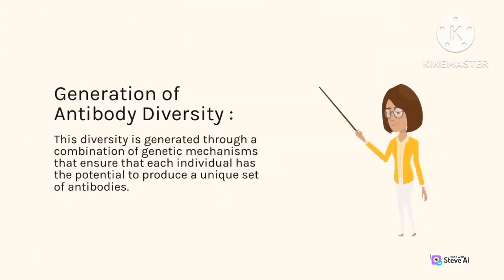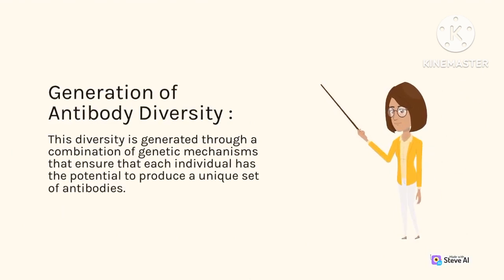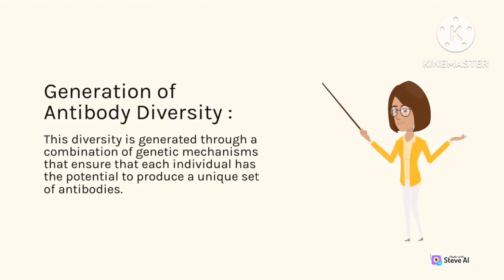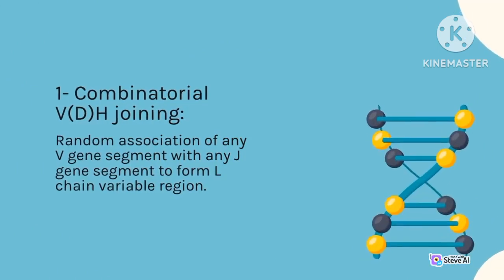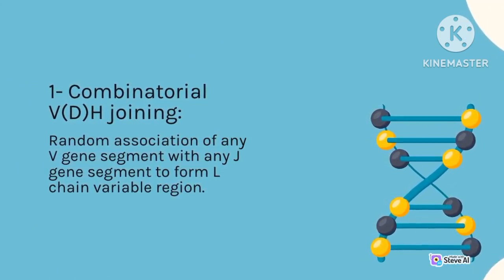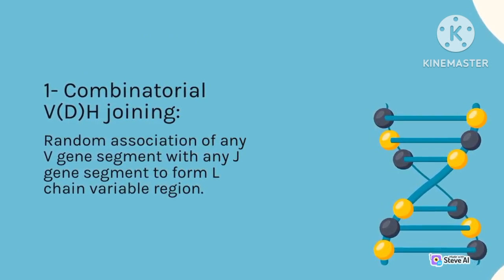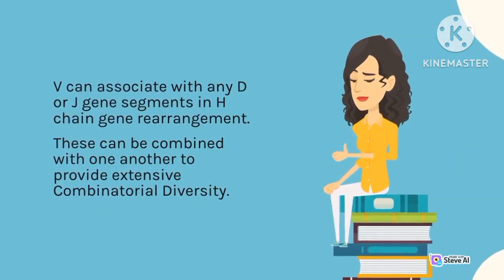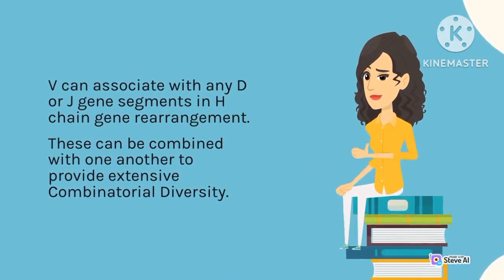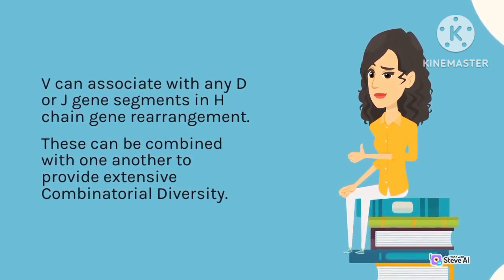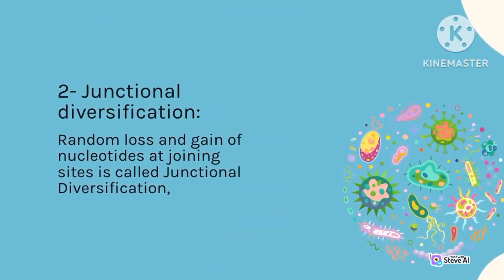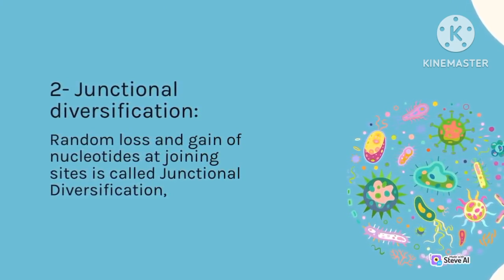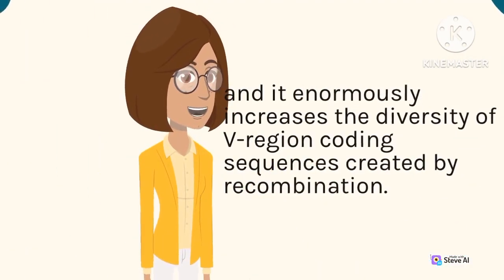Generation of antibody diversity: This diversity is generated through a combination of genetic mechanisms that ensure each individual has the potential to produce a unique set of antibodies. First, combinatorial VDJ joining — random association of any V gene segment with any J gene segment forms the light-chain variable region. V can associate with any D or J gene segments in heavy-chain gene rearrangement. These can be combined with one another to provide extensive combinatorial diversity. Second, junctional diversification — random loss and gain of nucleotides at joining sites enormously increases the diversity of V-region coding sequences created by recombination.